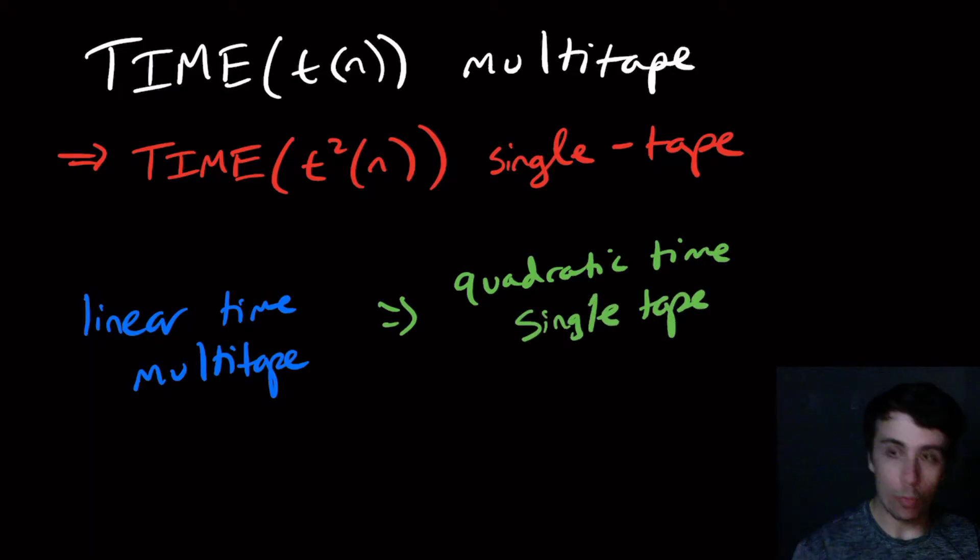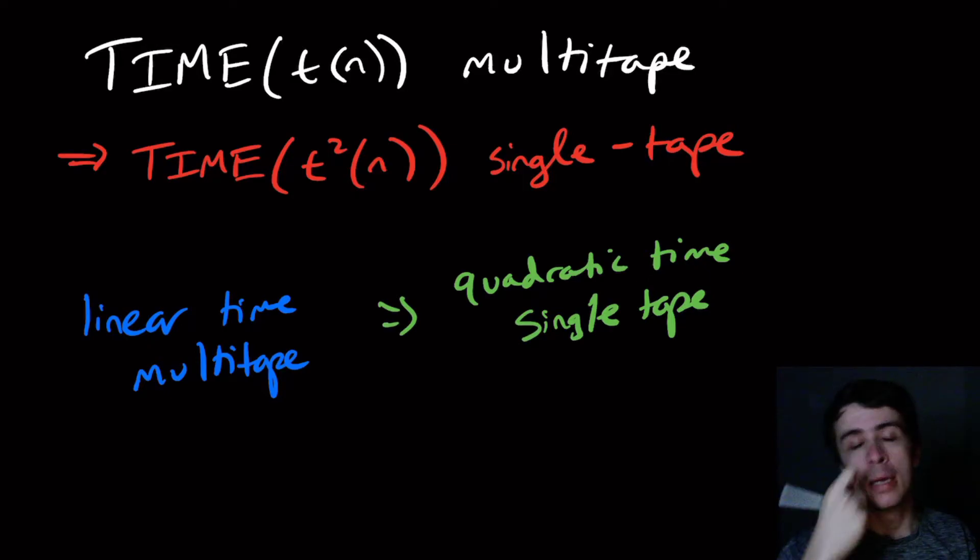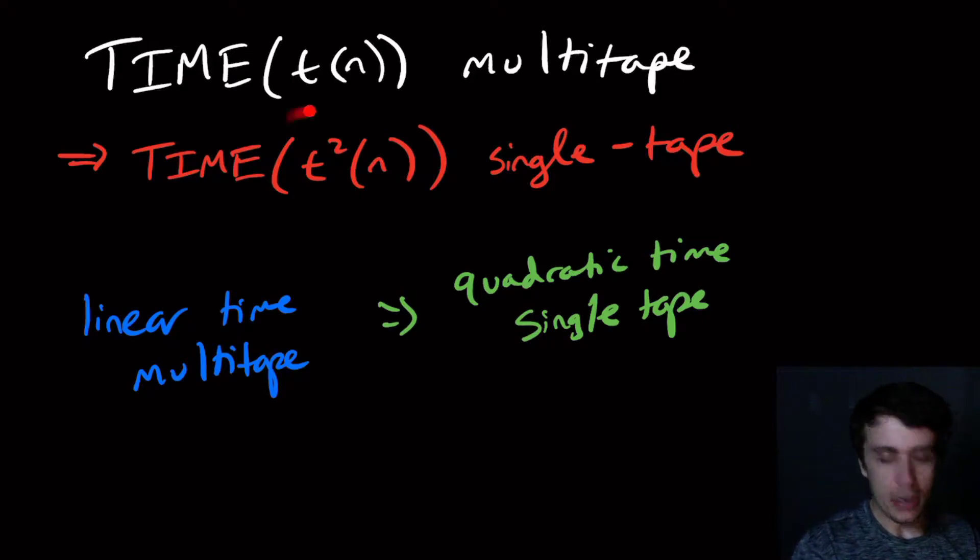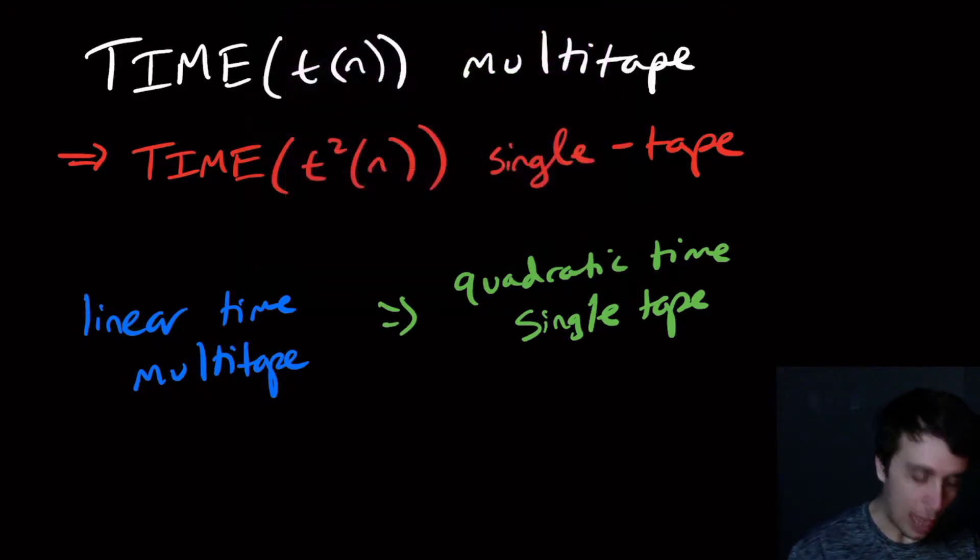And what we saw before was that these models are equivalent up to decidability, but they are not the same necessarily in terms of how long they actually take. So let's visualize how we actually did it before.